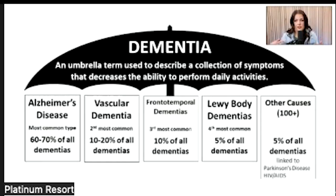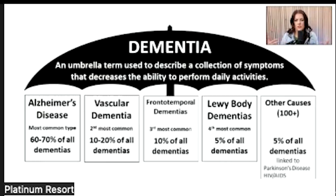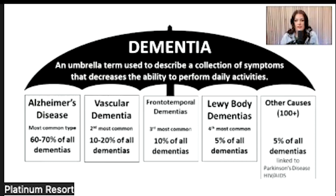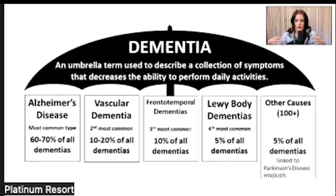This is where Parkinson's and Lewy body dementia can sometimes get confused with each other. Lewy body dementia is not the same as Parkinson's, but the two are pretty closely related because Lewy body causes some or all of the motor symptoms of Parkinson's. When I think of Parkinson's, I think of Michael J. Fox — that tremor you just can't stop. It's very similar with both Parkinson's and Lewy body.